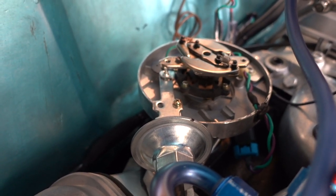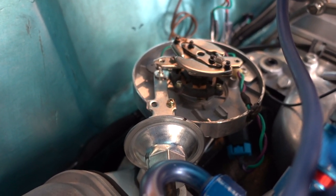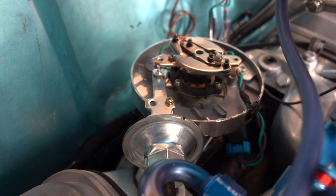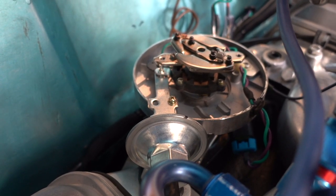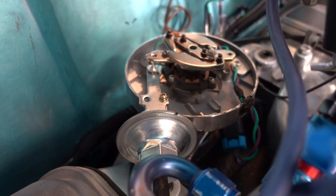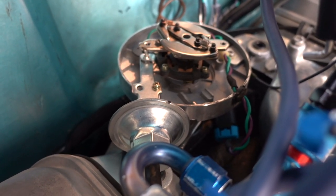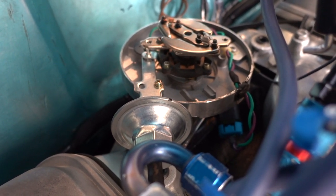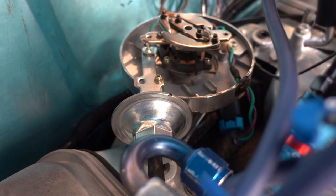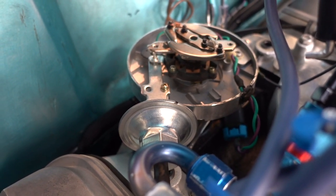But, if you're running unleaded fuel on the street, you want more advance down low. So you want more advance at idle, and then you want it to go away a little bit, and then you want more advance to come back. And the way you get more advance at idle is with vacuum advance. So, if I've got 26 degrees, and I need 30 degrees, I can add four more degrees of vacuum to get my 30 degrees.